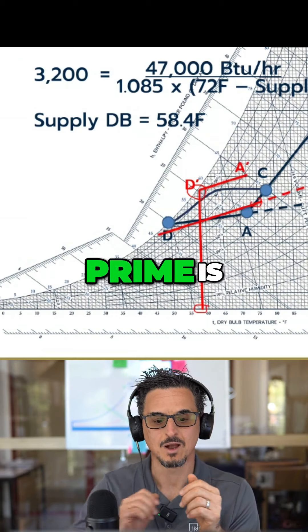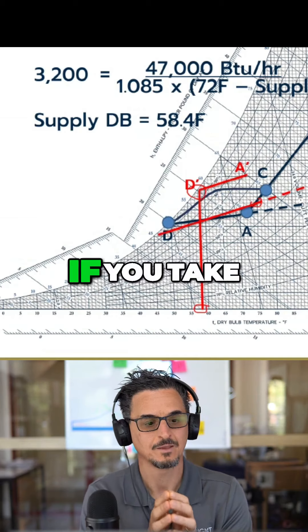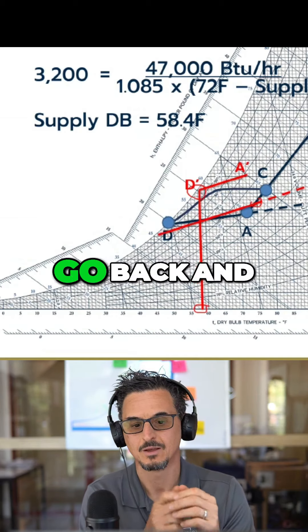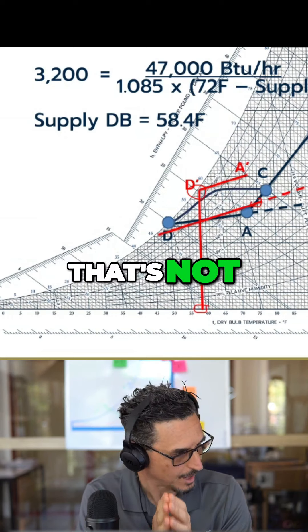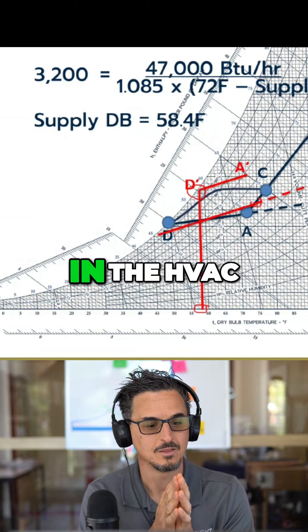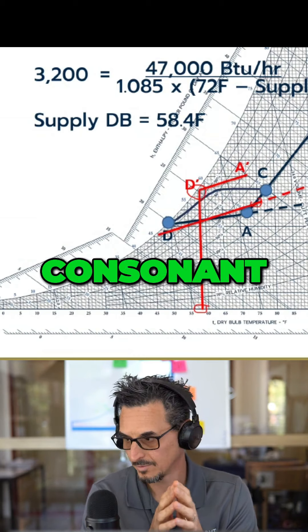And the resulting A prime is where we will end up in our space. Okay, so that right there, if you take anything away from this today, go back and watch this. That is the fundamental thing that's not captured very well in the HVAC community, causes so many problems at part load.